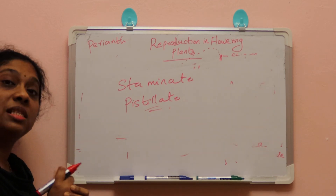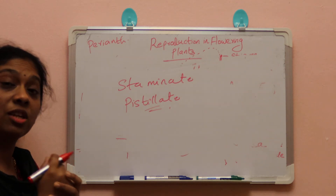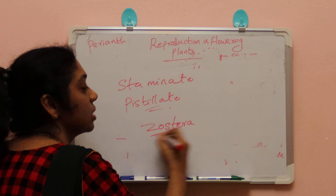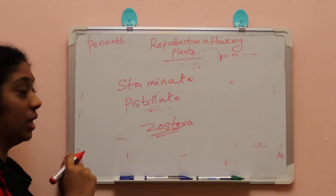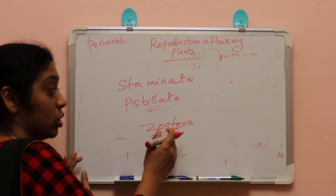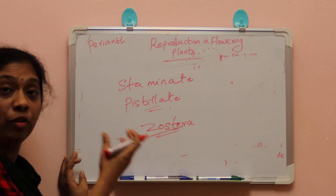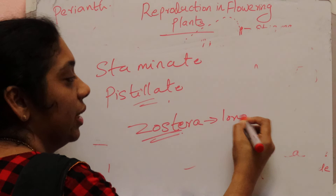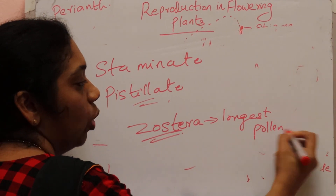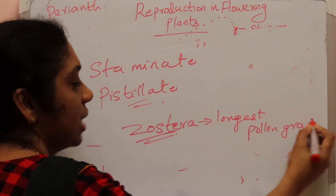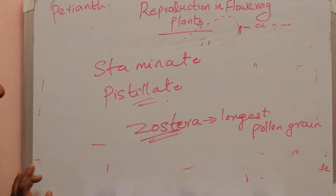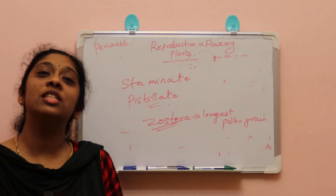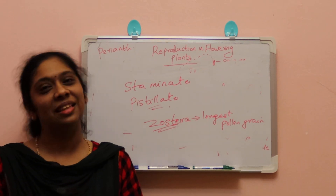An interesting fact: the plant with the longest pollen grain is Zostera, which is a seagrass. This can be asked in NEET exam. Zostera has the longest pollen grain. This brings us to the end of this session; we will continue this chapter in the next video.